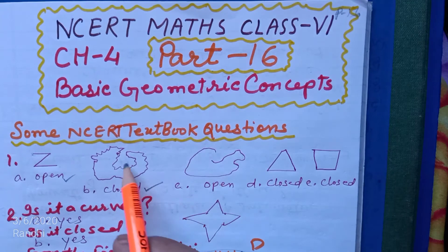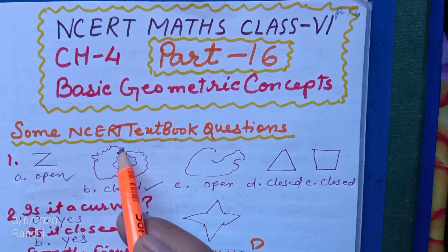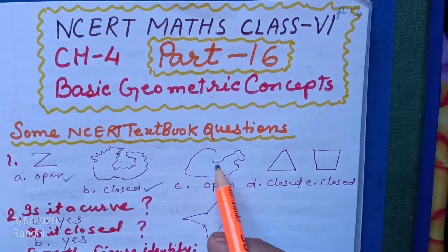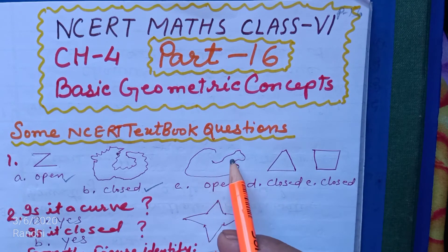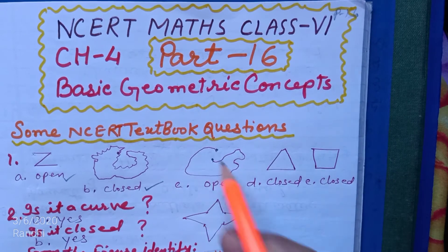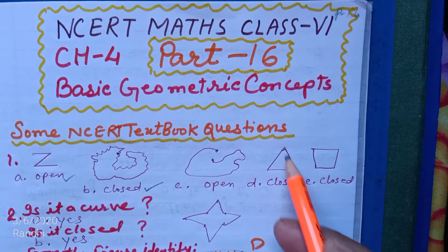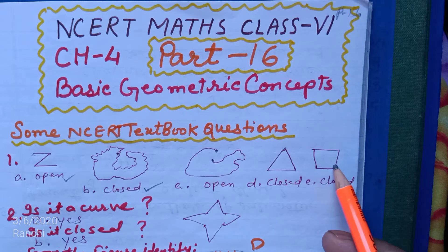Number B is a closed curve. Starting point and ending points are the same, that is why this is a closed curve. Number C is an open curve. D is closed curve and E is closed curve.